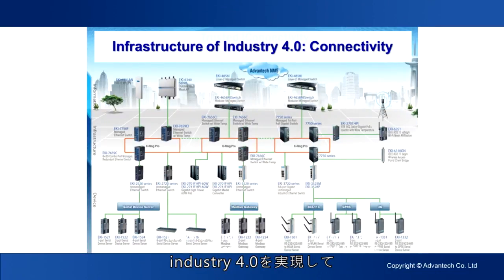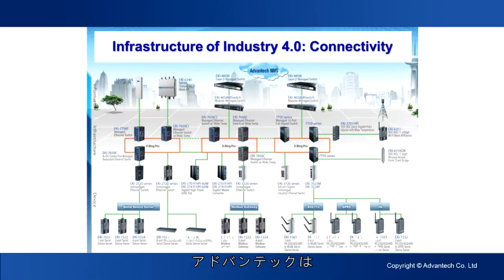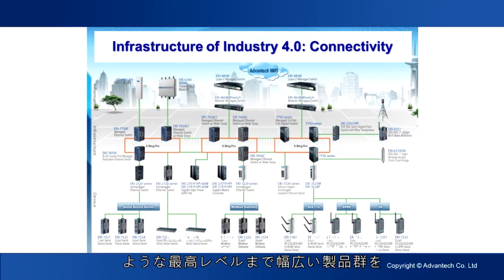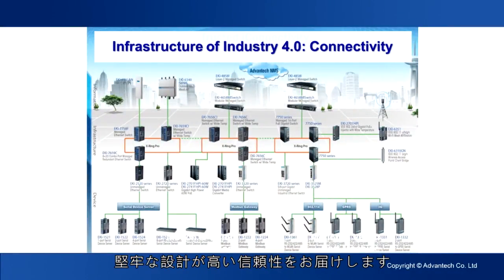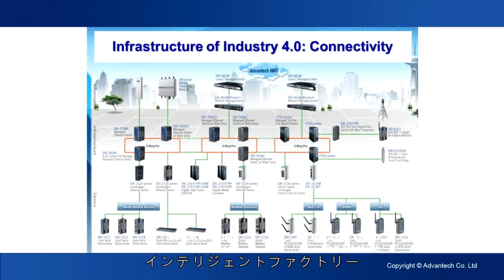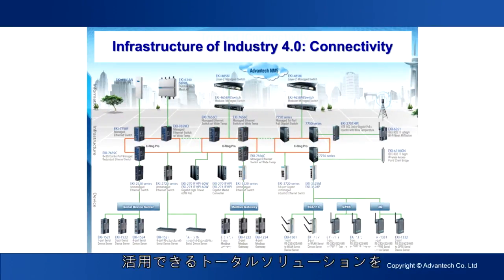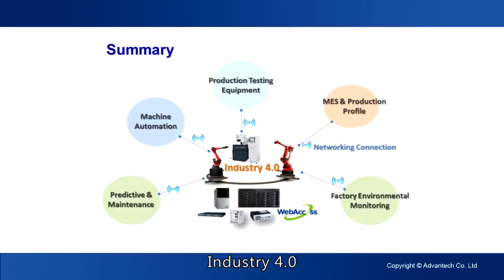Connectivity is very important to realize Industry 4.0 and make factories intelligent. Advantech provides device servers, gateways, wireless APs, and top-level fully managed switches, all designed with ruggedized and high-reliability features suitable for harsh environments. We believe customers can choose a total solution to enable an intelligent factory — not only IPC or systems, but also networking products. From now on, Industry 4.0 solutions lead the latest change in manufacturing technology.